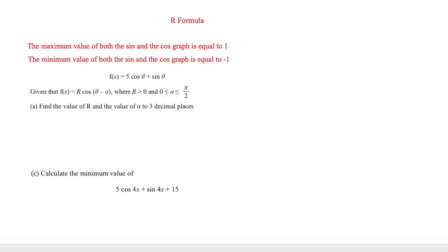The next question involves maximum and minimum values. We need to know that the maximum value of both the sine and cosine graph is 1, and the minimum value is −1, because of the shape of the curve — the sine curve goes to 1 at the top and −1 at the bottom. The first part is the same as before, but we'll have r cos(theta − a) instead of a sine form.